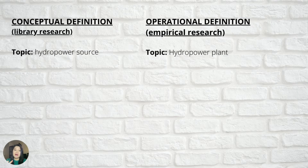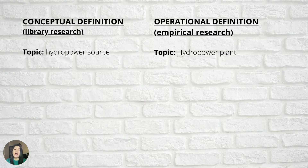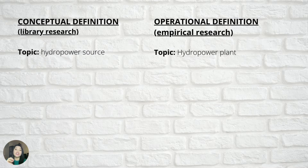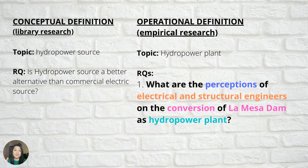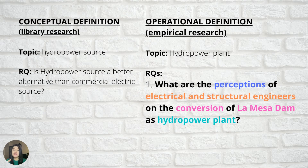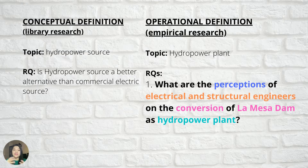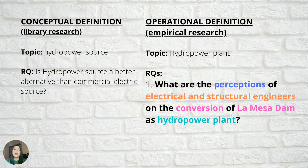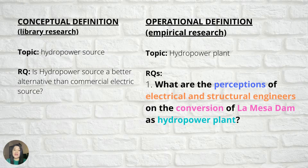Let us now discuss a specific example. Coming from your conceptual definition, your topic is hydropower source. Based on your library research, you can now really specify your research topic — so you can change it into hydropower plant. Then add more variables to your finalized research question. For example, 'What are the perceptions of electrical and structural engineers on the conversion of Lamacidum as a hydropower plant?' You can see here the different specific variables: the perception of electrical and structural engineers about the conversion of Lamacidum as a hydropower plant.